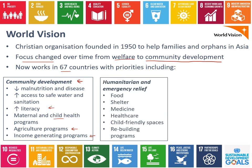World Vision also has a humanitarian and emergency relief section, provided following things like natural disasters or conflicts. This is more looking at emergency aid — things like food, shelter, medicine, and health care. They have a big focus on children, creating safe spaces for children that have been displaced. They also have rebuilding programmes to help communities bounce back after disasters.